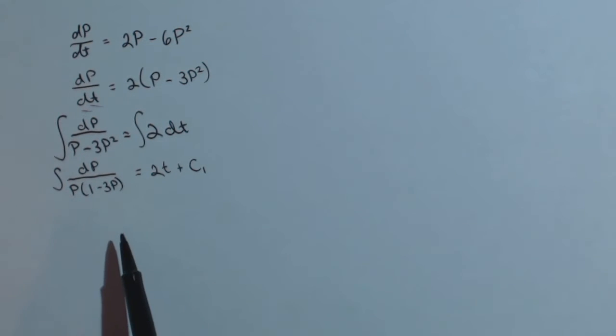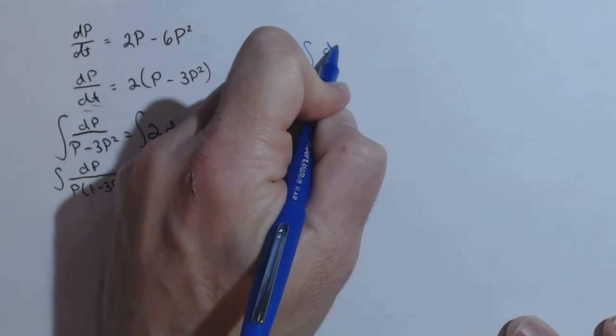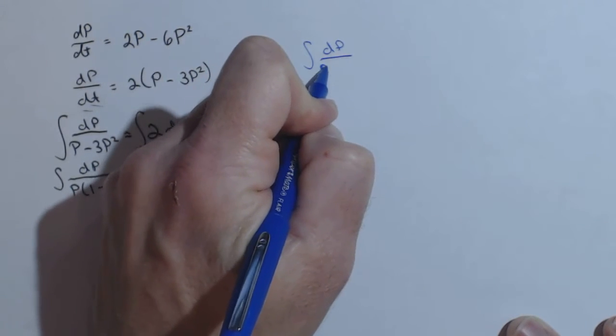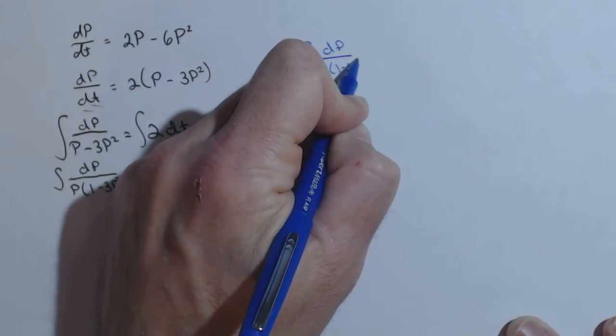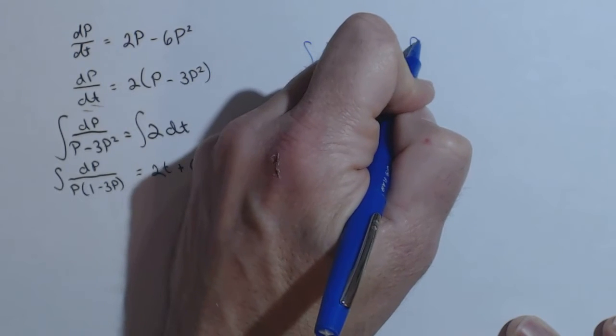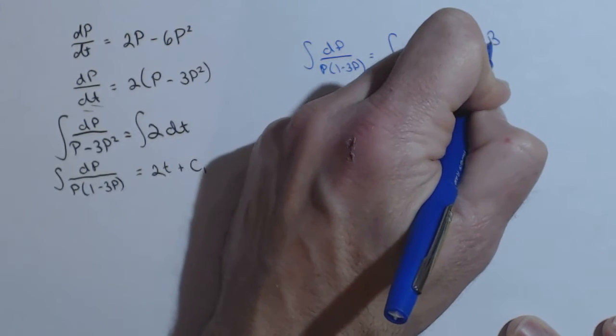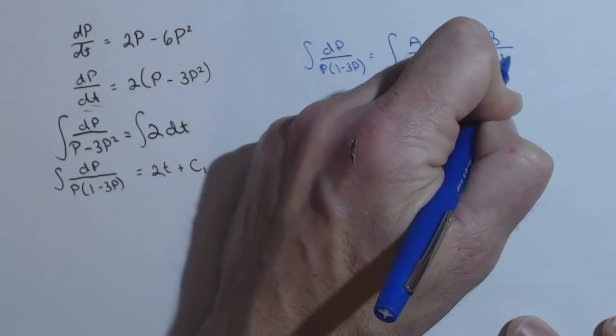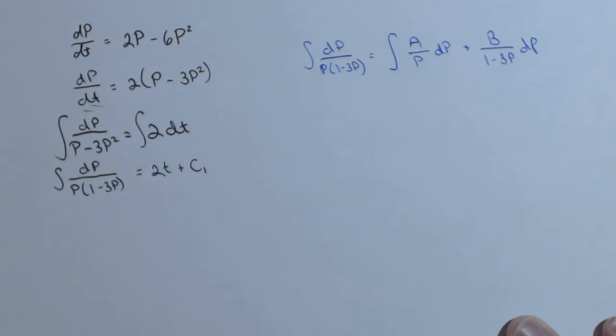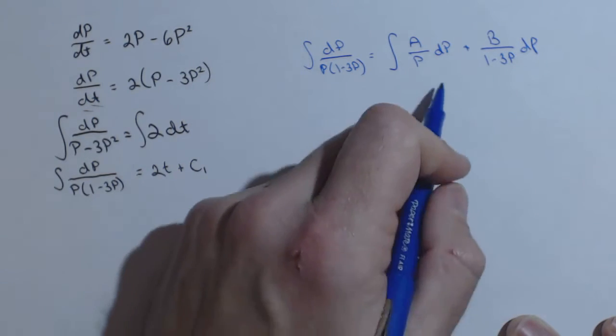So it looks like we can do a partial fraction decomposition on this guy. Let's do that off to the side and then come back and put it in. I think that will be a nice way to do that. So just to give ourselves a little bit more room. We want to do this integral here: integral dp over p times 1 minus 3p.